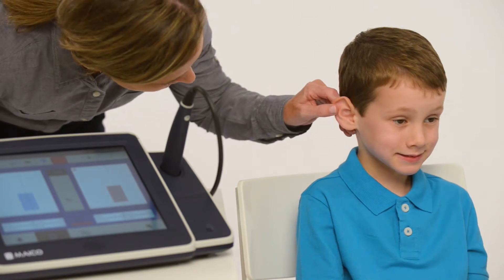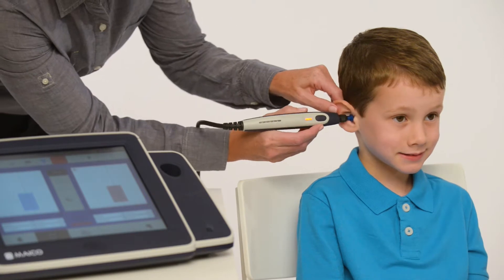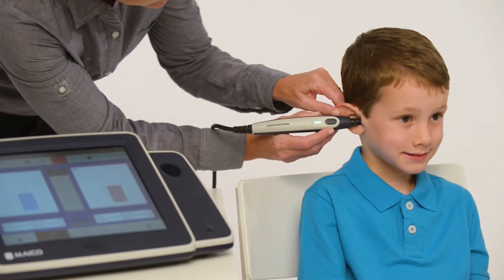Pull up and back on the ear while inserting the probe tip into the ear canal. The probe should be directed towards the nose. Once a seal is detected, the test will start automatically.